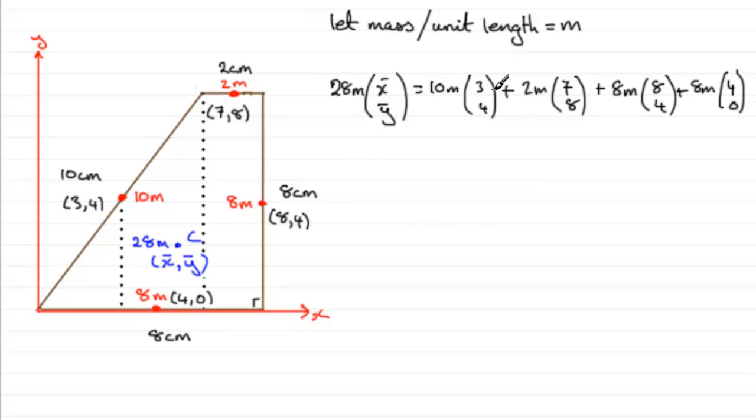So you'll notice we've got M in every term here. So we could go through and cancel that out. That would simplify the equation. And that leaves us with 28X bar, y bar.